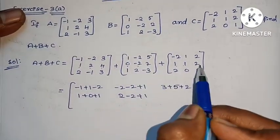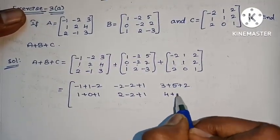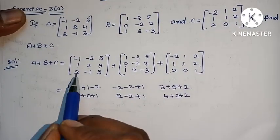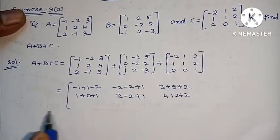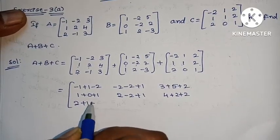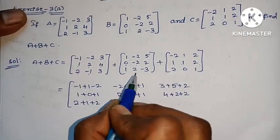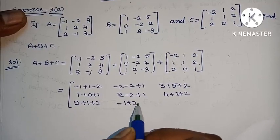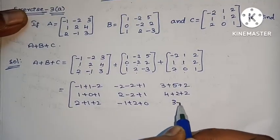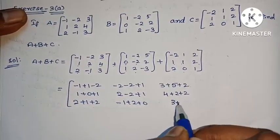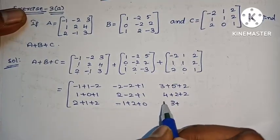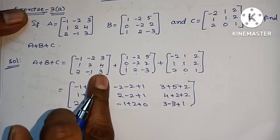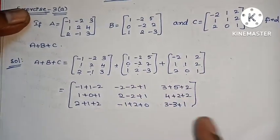Continuing: 4 plus 2 plus 2, 4 plus 2 plus 2, next 2, 2 plus 1 plus 1 plus 2, minus 1, 2, 0, minus 1 plus 2 plus 0, 3 plus minus 3, plus 1, plus 3, minus 3 plus 1.